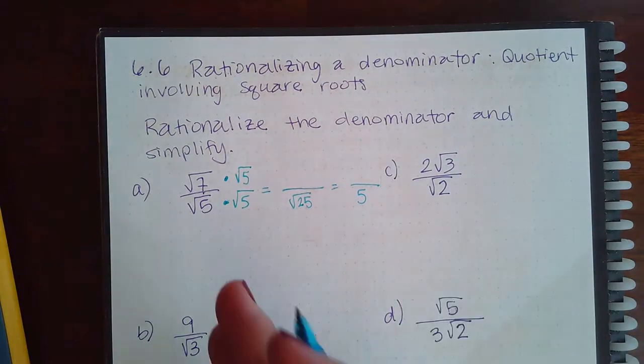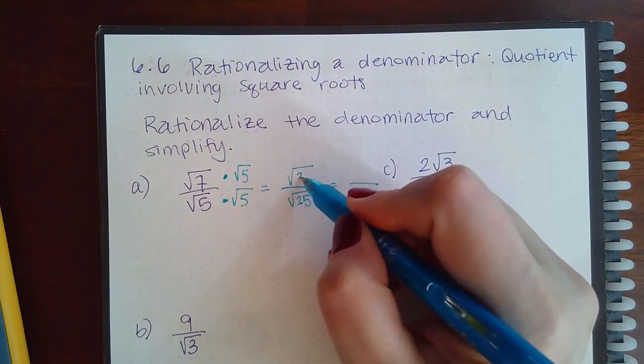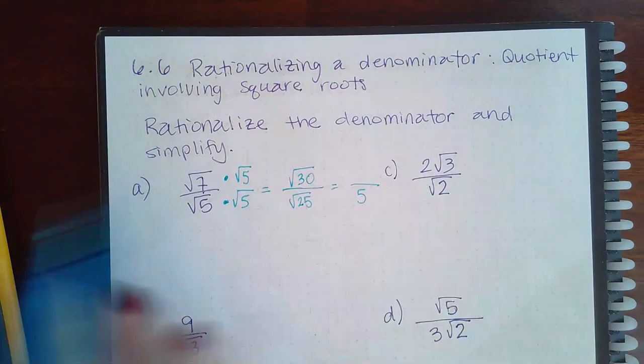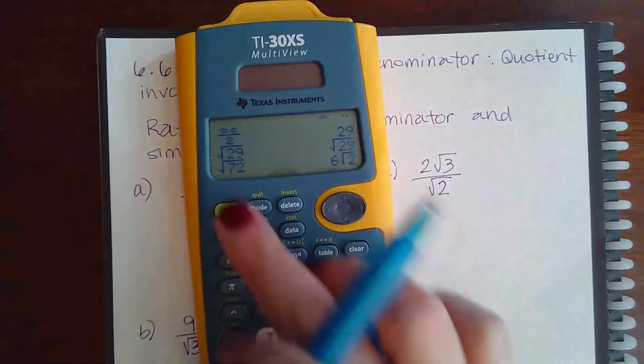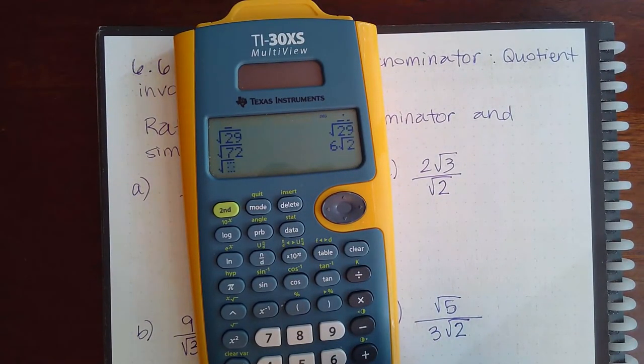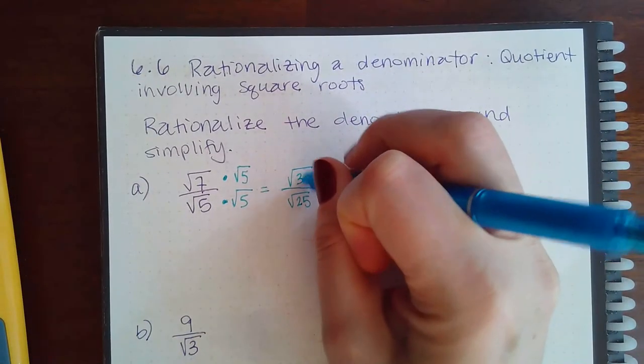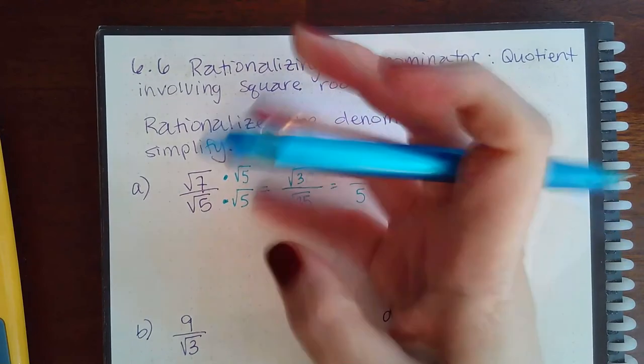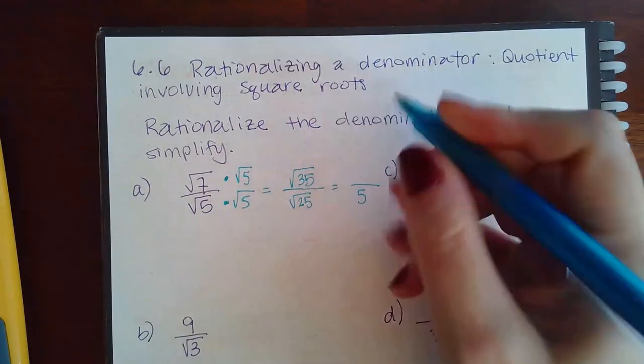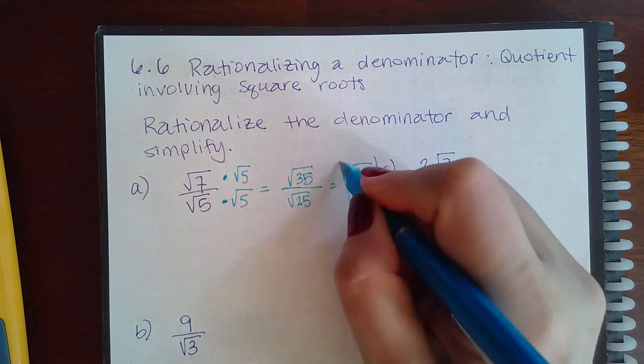So when I have a radical times a radical, I'm going to multiply those insides, and I don't believe the square root will reduce because it came from two prime numbers. It's actually 35, right? 7 times 5 is not 30, 7 times 5 is 35, and the square root of 35 does not simplify. So that's all we needed was for that denominator to no longer have a square root in it.